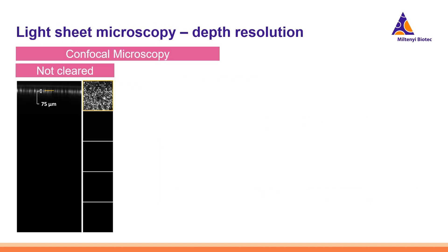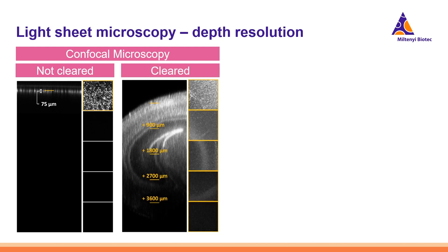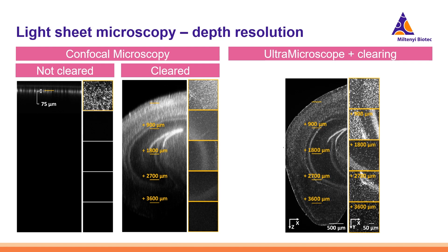Here is an example showing the imaging capabilities of each method when applied to large samples. On the left side, images captured by confocal microscope show both cleared and un-cleared samples. As we venture deeper into the sample, the non-cleared sample becomes very challenging to image, while resolution gradually weakens to nothing even in the cleared sample. In contrast, when imaging a cleared sample using the light sheet system, we can capture all the intricate details without significant loss of information — demonstrating the exceptional strength and advantages of the light sheet instrument.